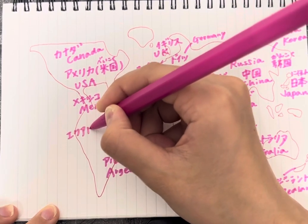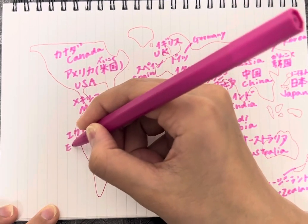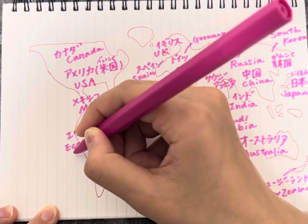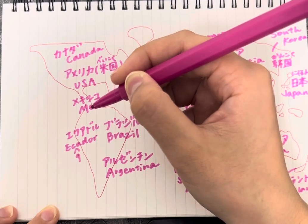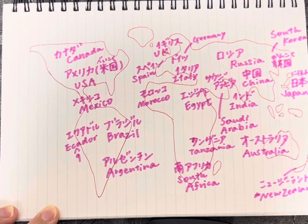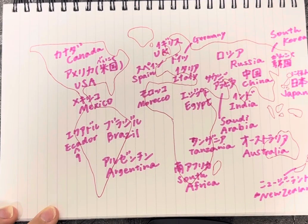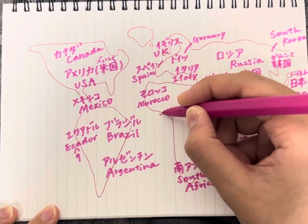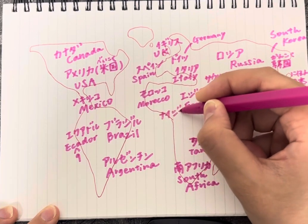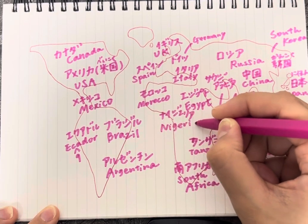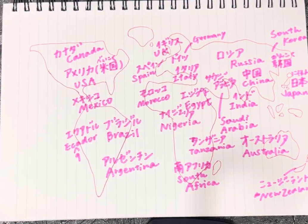Ecuador is Ekuadoru. I probably should have spelled that wrong, sorry. Ecuador. Nigeria is Naijeria. And that is it for today, bye.